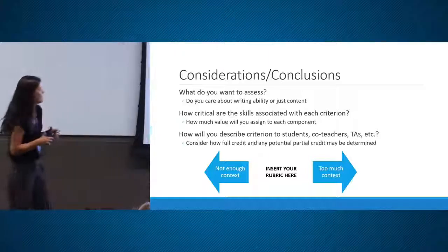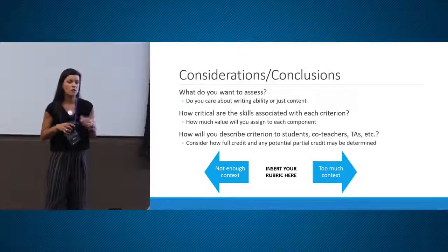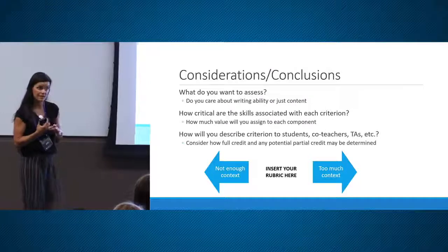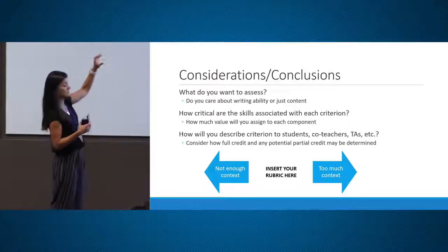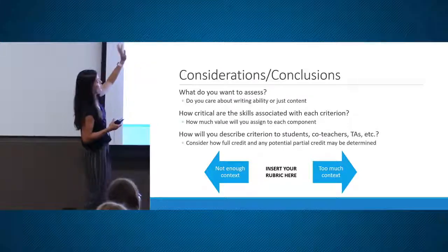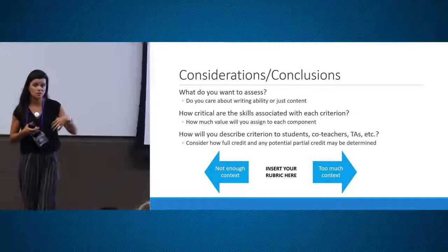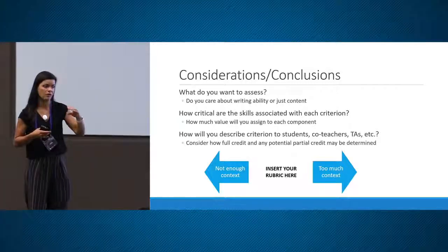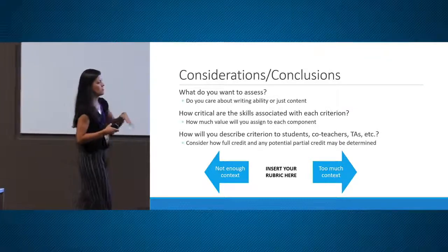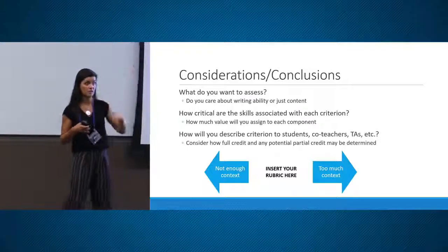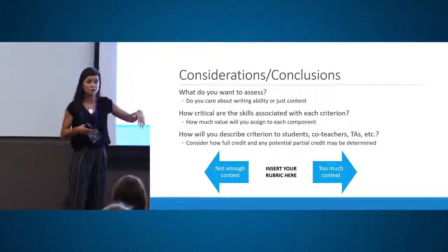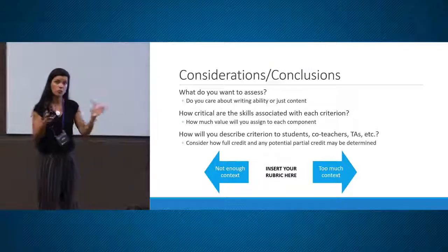Considerations for creating rubrics: ask yourself what you want to assess — writing ability, only content, critical thinking, or a specific skill. How critical are the skills associated with each criterion? I usually put the most important criteria on top, worth more points. How are you going to describe the criterion to your co-teachers and TAs so grading is consistent?